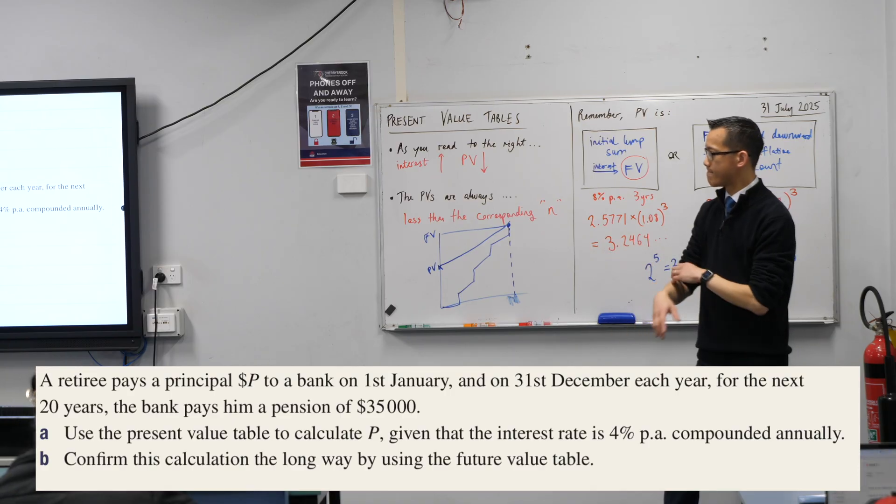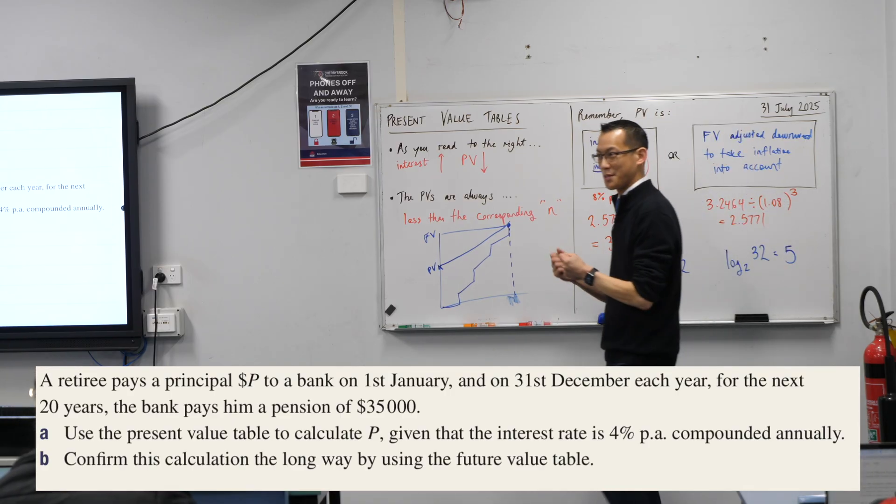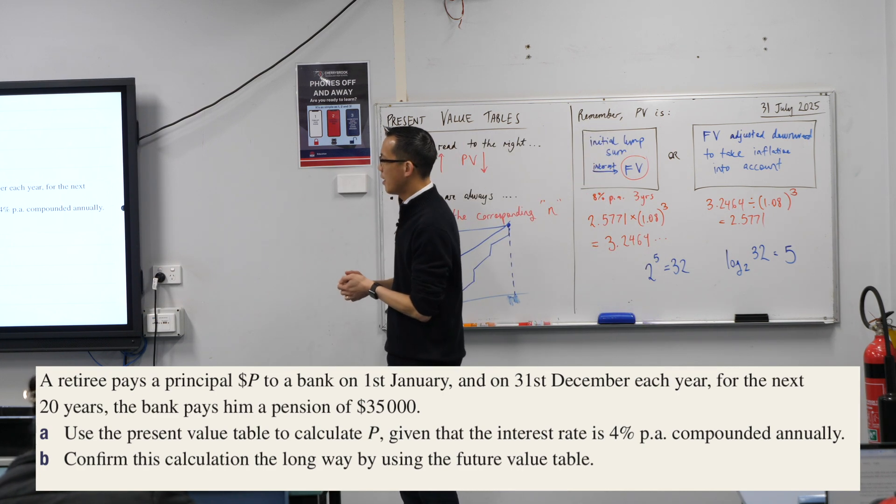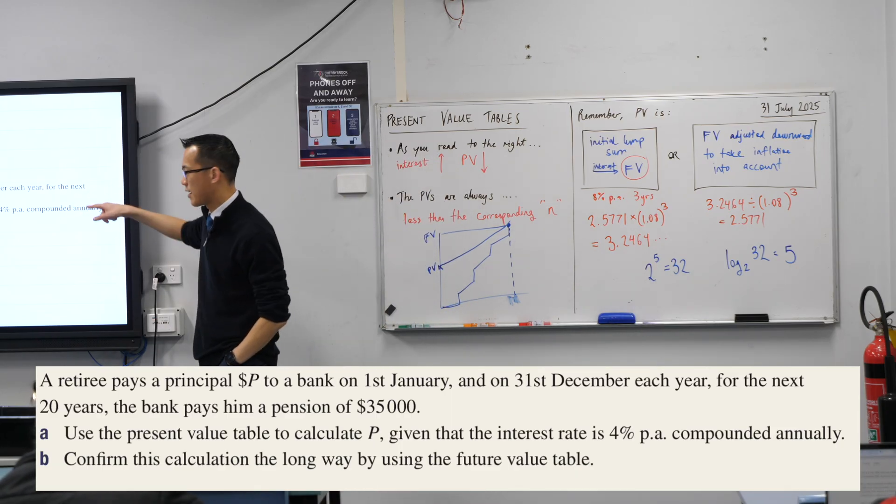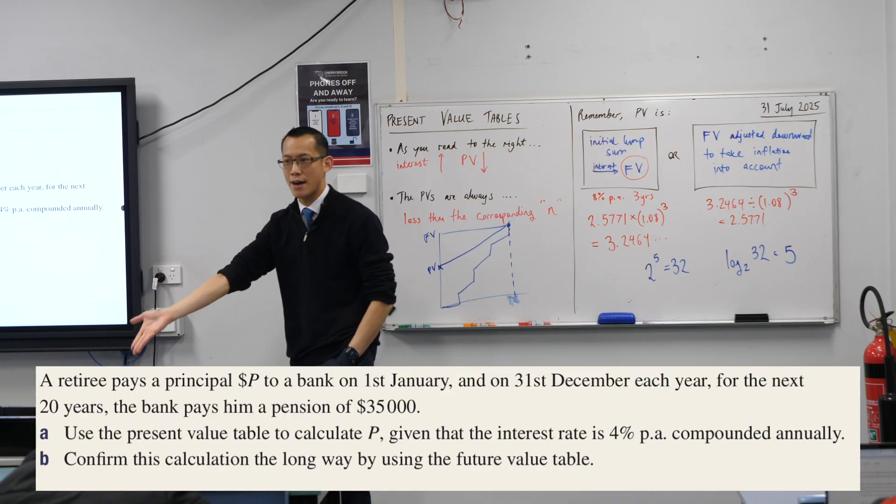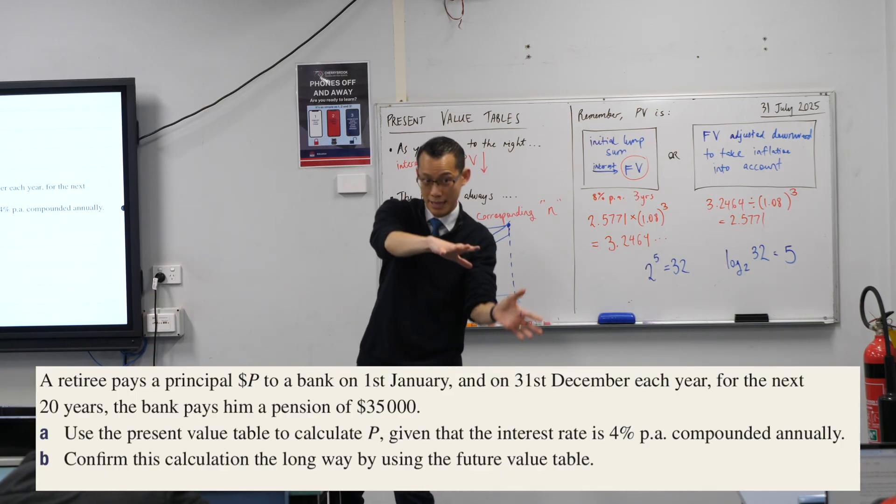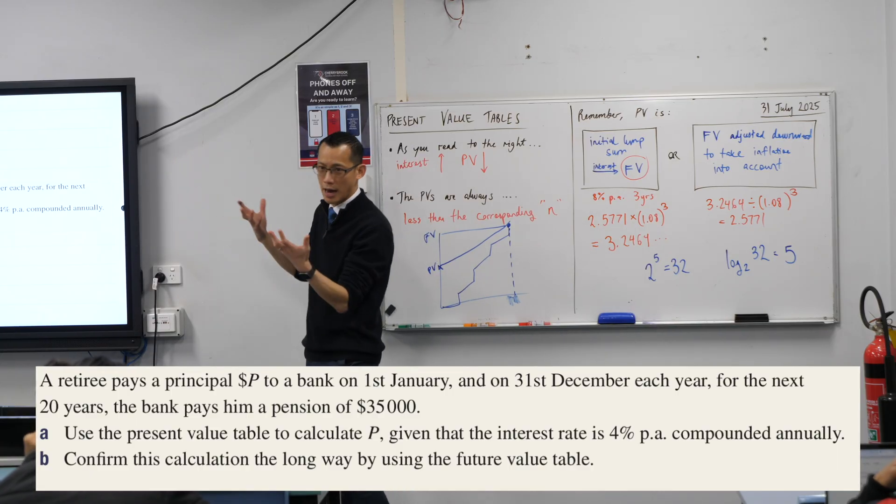Generally speaking, a question will have to tell you to use a present value table because they will literally print out a present value table for you. They don't expect you to bring one with you. So you can see here, it says in part A, use the present value table, which by the way, I do have it on screen here. I'll change it in a minute, but it might actually be useful if you have it on your laptop and you can also see this question simultaneously. So if you haven't opened it up, I encourage you to do so.